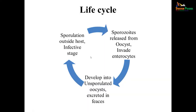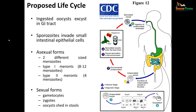The life cycle basically involves sporulation outside the host. Sporozoites are released from oocysts, invade enterocytes, and develop again into unsporulated oocysts which are excreted in feces. The ingested sporulated oocysts taken through contaminated food, water, or raspberries exist in the GI tract, produce sporozoites which invade the GI tract, form asexual merozoites — type 1 and type 2 meronts — then sexual forms, and finally an oocyst-like form which is laid into the environment.